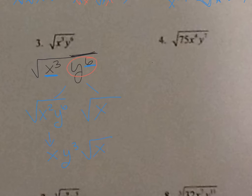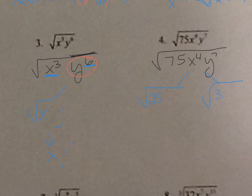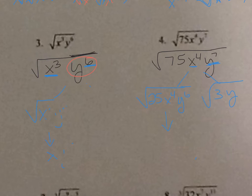Number four: the square root of 75 x to the fourth y to the seventh. Put perfect squares on the left and non-perfect squares on the right. The largest perfect square in 75 is 25, so that's 25 times 3. x to the fourth has an even exponent — perfect square, goes on the left, nothing on the right. y to the seventh: go down one exponent to y to the sixth times y. Now take the square roots: square root of 25 is 5, square root of x to the fourth is x squared, square root of y to the sixth is y to the third. So the answer is 5x squared y to the third times the square root of 3y.